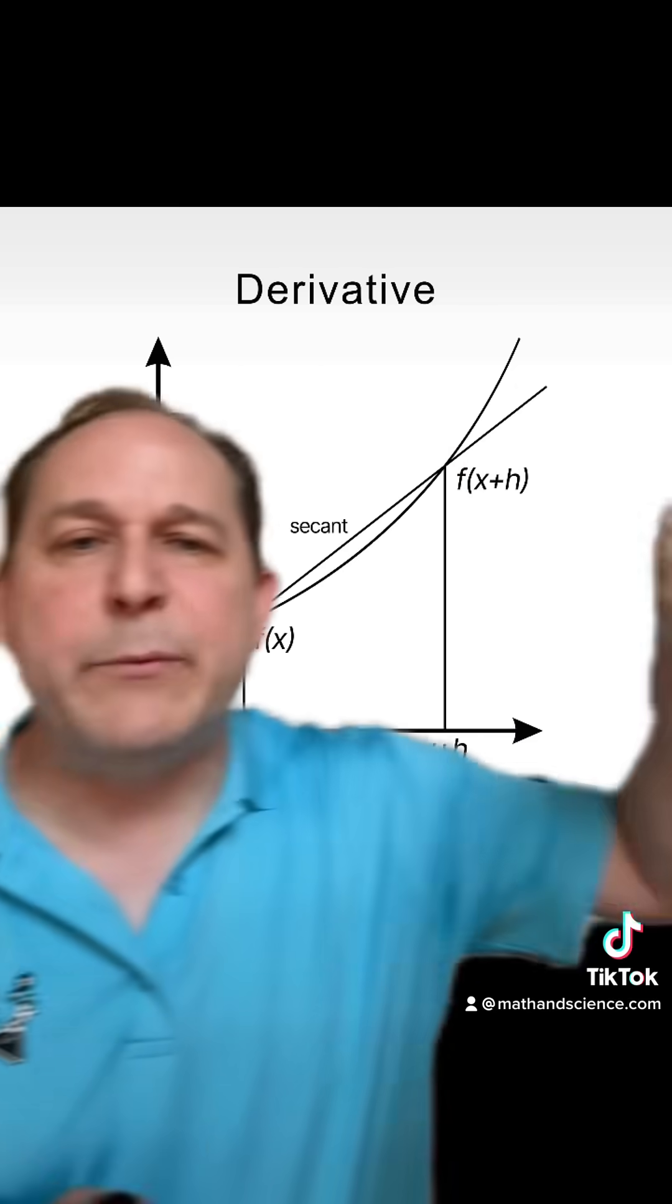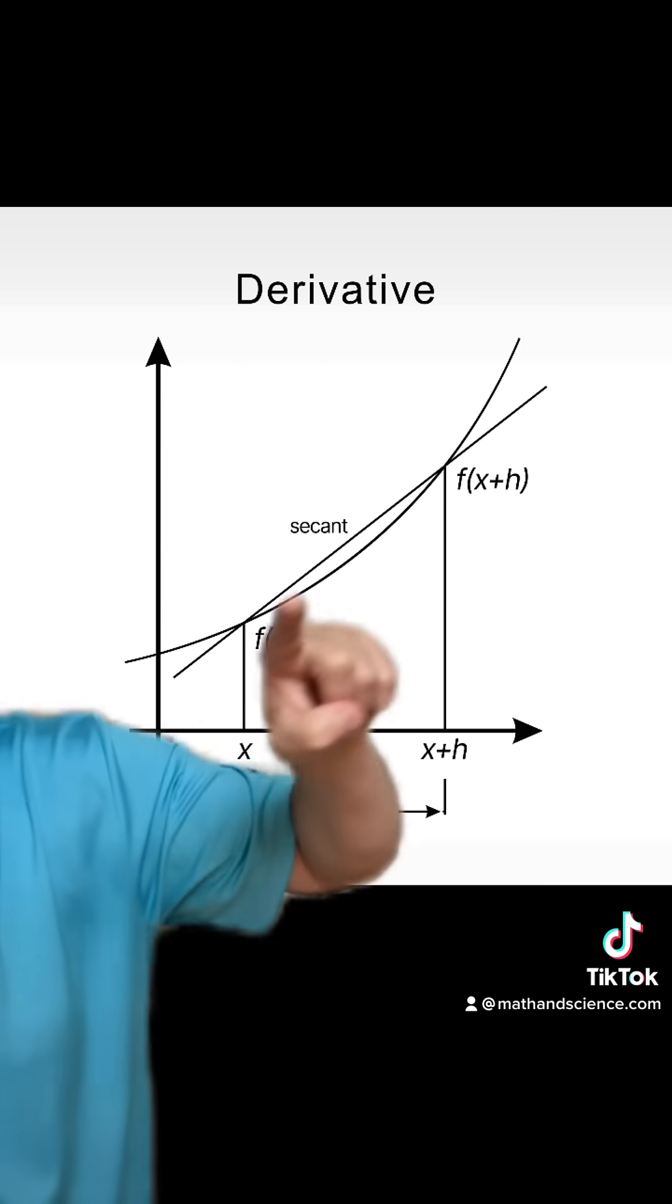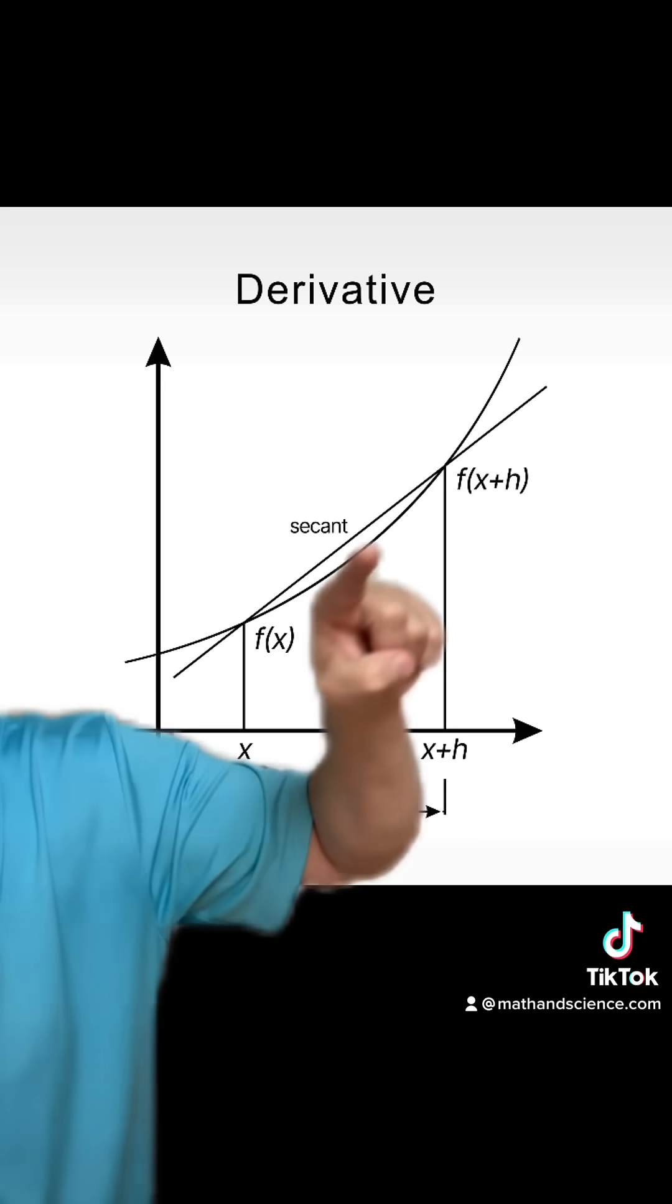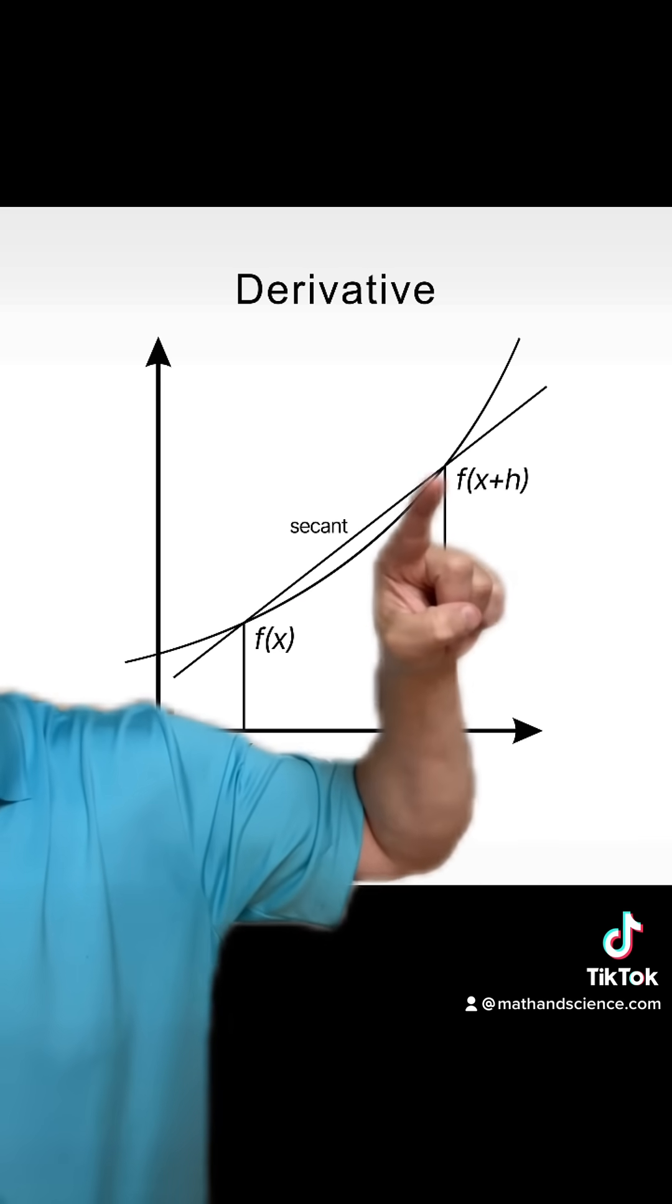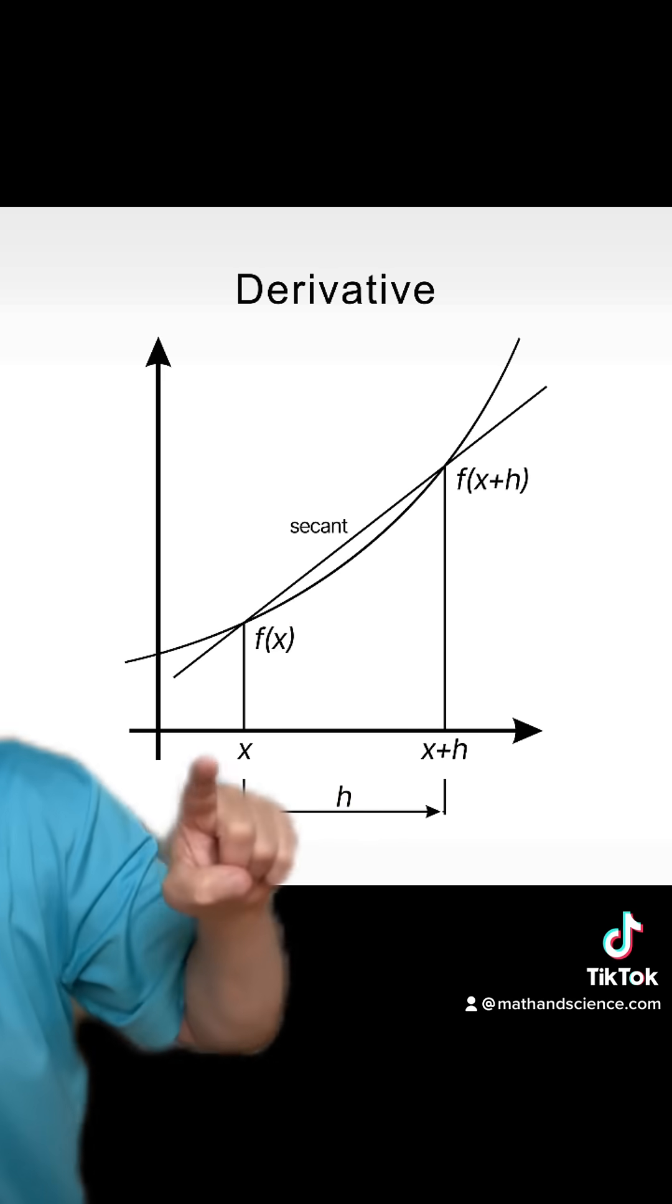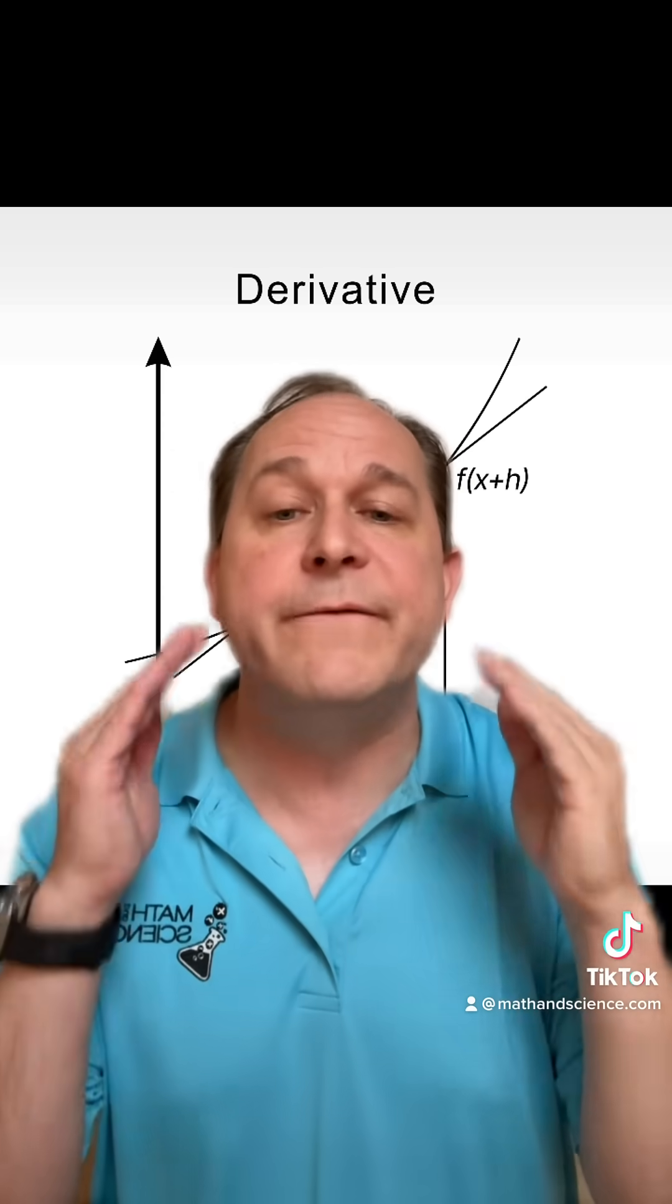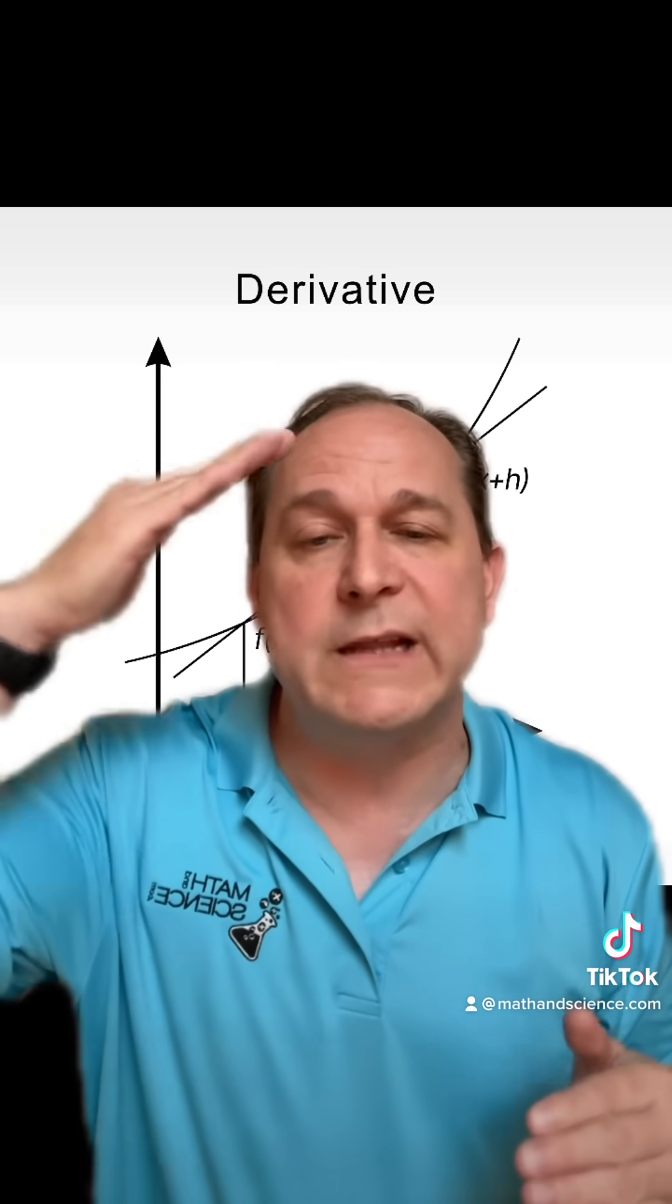So let's say we have a curve like this. What we do is we draw a straight line through the curve and we calculate the slope of that straight line. We get a number. Then we bring the right-hand point closer and closer to the left-hand point, calculating the slope of the line that goes through those two points. Eventually, we get to the slope of the line tangent.